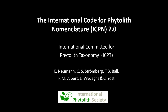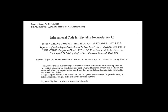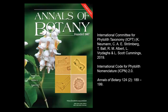That code, known as ICPN 1.0, was published in the Annals of Botany in 2005. As anticipated by the first committee, years of use of the code revealed the need to revise, update, and expand it. Accordingly, in 2014 the IPS commissioned a new committee — now named the International Committee for Phytolith Taxonomy — with the task of updating, revising, and amending ICPN 1.0. This work was published in 2019 under the title of ICPN 2.0, still in the Annals of Botany.